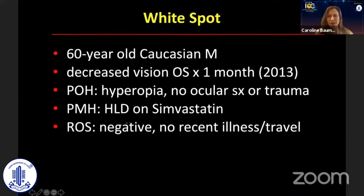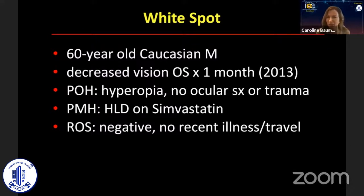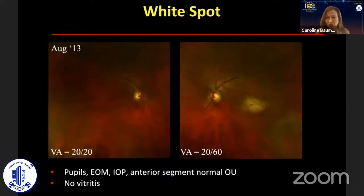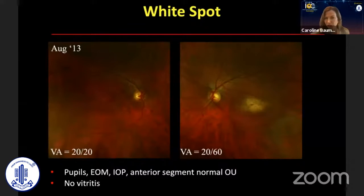This was a 60-year-old white male who presented with decreased vision in the left eye for one month. There was really nothing significant in the past ocular or medical history. The systems were negative. The right eye was normal with 20-20 vision, and the left eye was 20-60 vision.